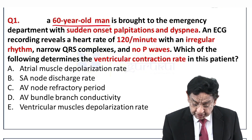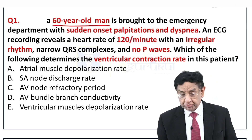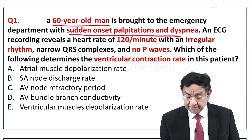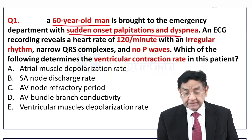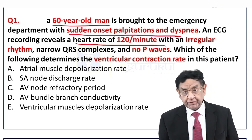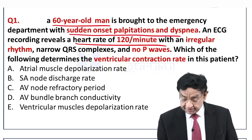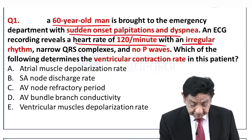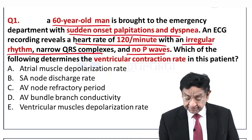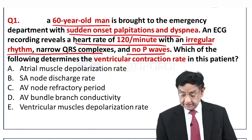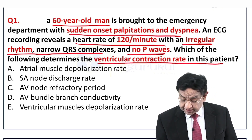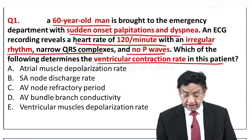We have a 60-year-old man brought to the emergency department with sudden onset of palpitation and dyspnea. ECG done reveals a heart rate of 120 per minute, irregular rhythm, narrow QRS complex, no P-wave. Which of the following determines the ventricular contraction in this patient?